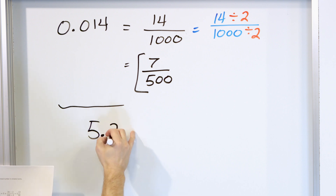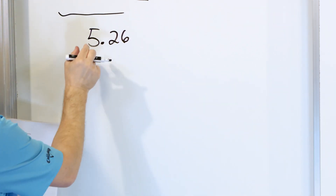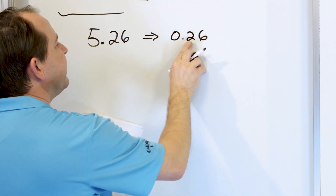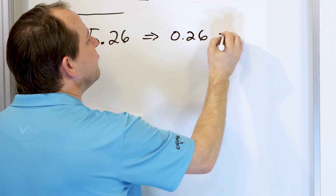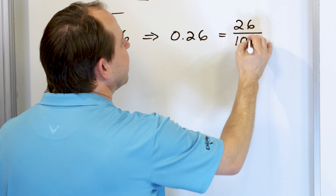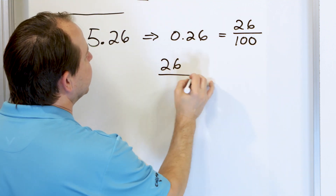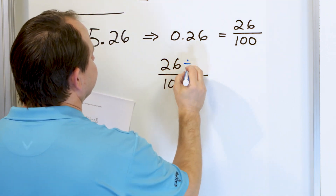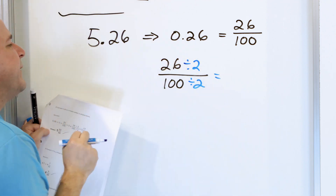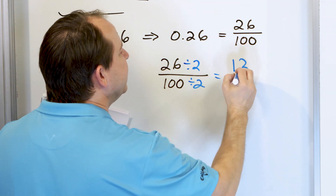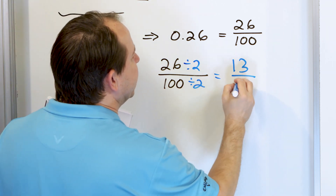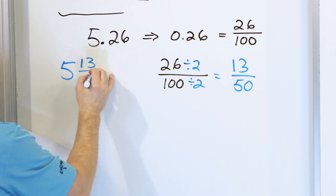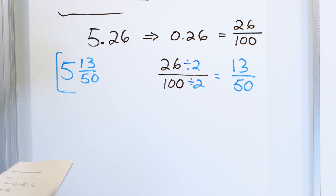Next, let's take a look at 5.26. The whole number is 5, so let's focus only on 0.26. This is 26 in the farthest position, the hundredths position. So we're going to simplify 26 one-hundredths. We divide top and bottom by 2 because they're both even. 26 divided by 2 is 13, and 100 divided by 2 is 50. So 13 fiftieths — we attach it to the 5 to get 5 and 13 fiftieths.